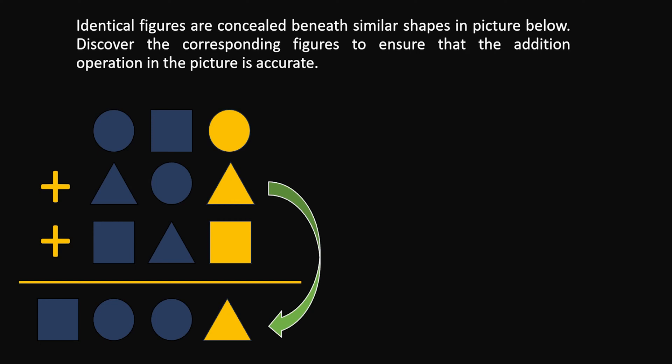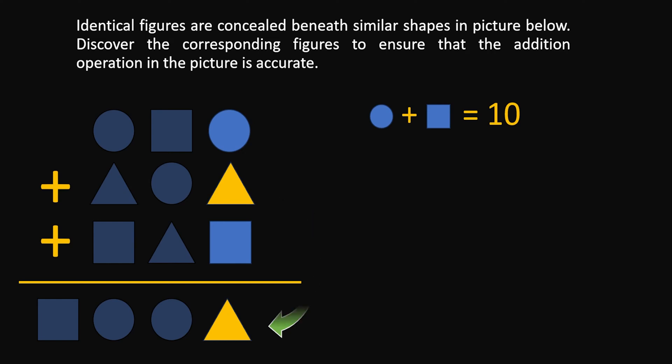That means that our circle and square must have a combined value of 0. The only way that is possible is if square plus circle equals 10. This is our first condition. In this way, you can replace the triangle with any digit you want — for example, if triangle equals 4, then 10 plus 4 equals 14, which ends with the digit 4. Because our number is greater than 10, we need to add plus 1 into our next column.